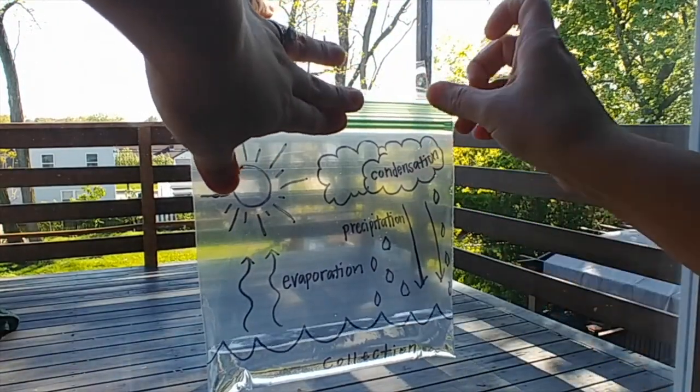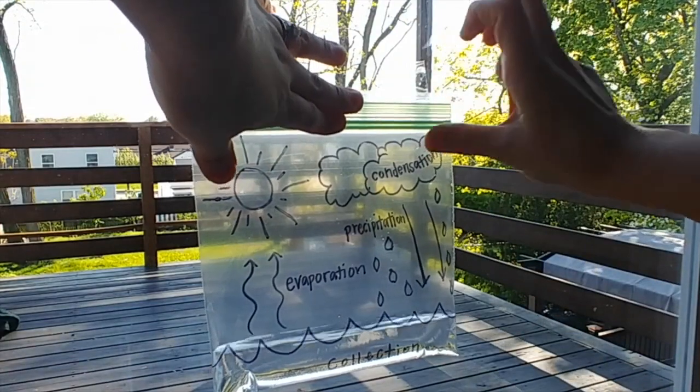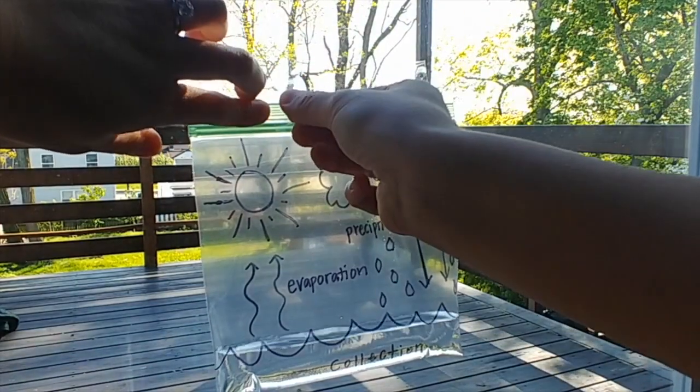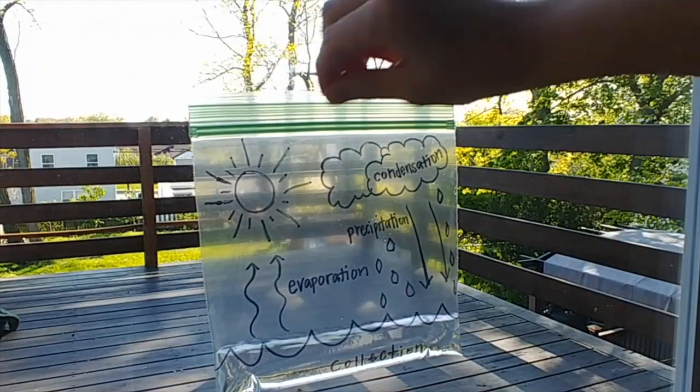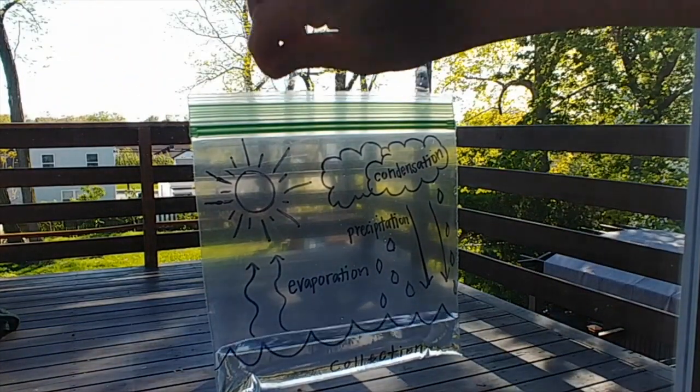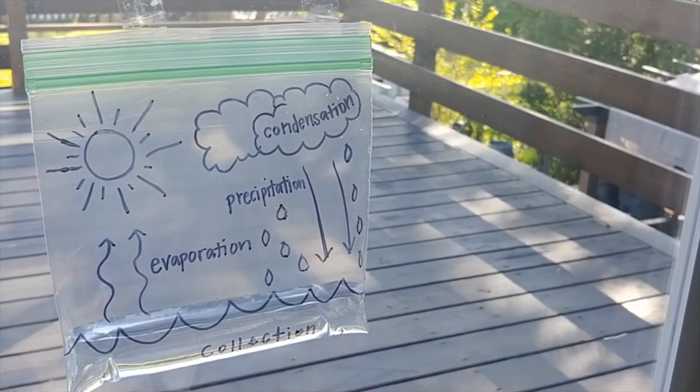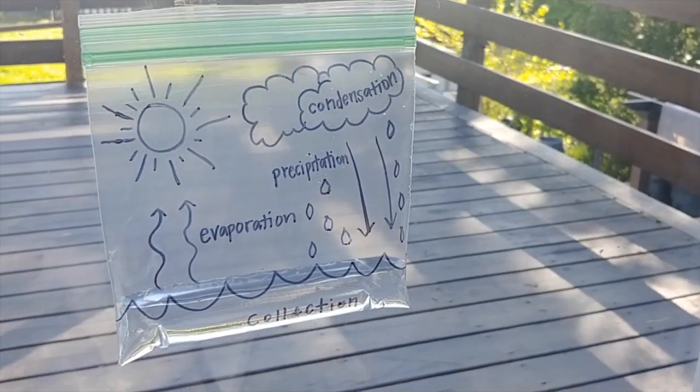And that's it! You have successfully created a model of the water cycle. Now all you have to do is wait a few days and as the sun naturally heats the water inside the bag, you should be able to see the water go through all of the processes of the water cycle.